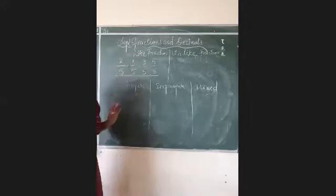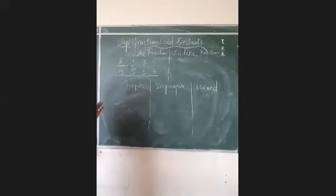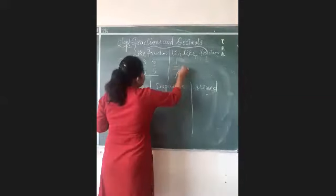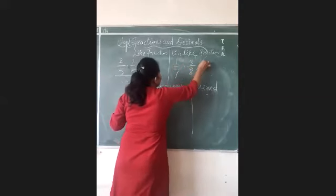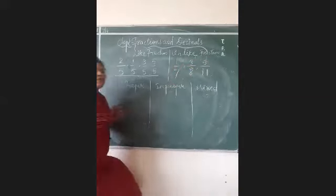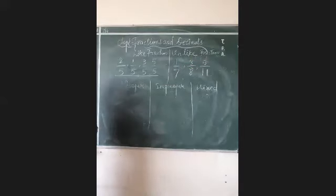These are all like fractions. Now, unlike fraction, when they are the part of different different whole. For example, 1 by 7, 3 by 8, 5 by 11, where the denominators are different in each case, where the denominators are different in each case, then we call it unlike fraction.